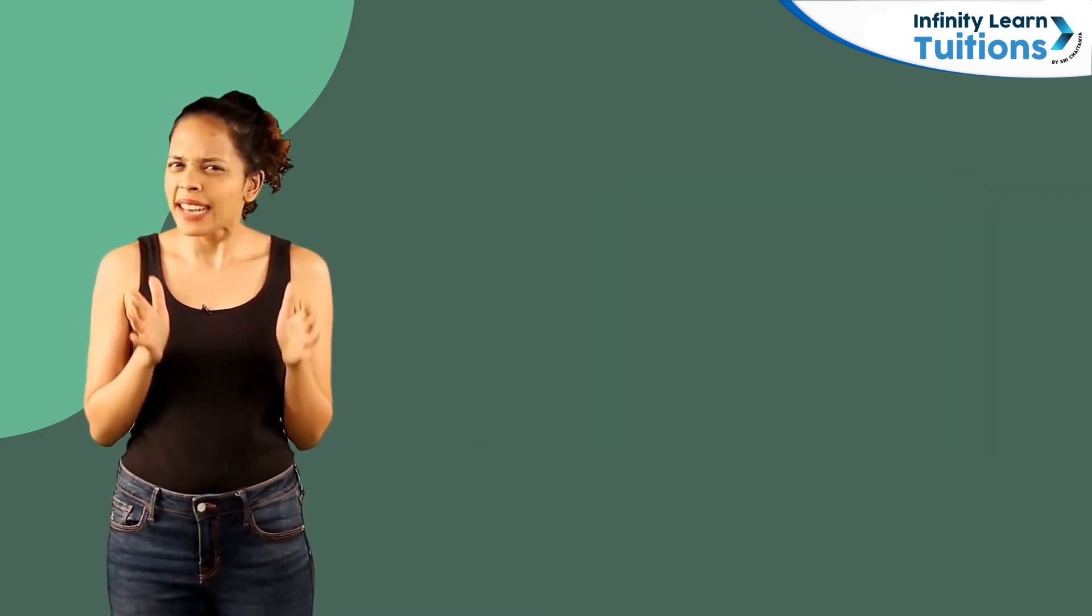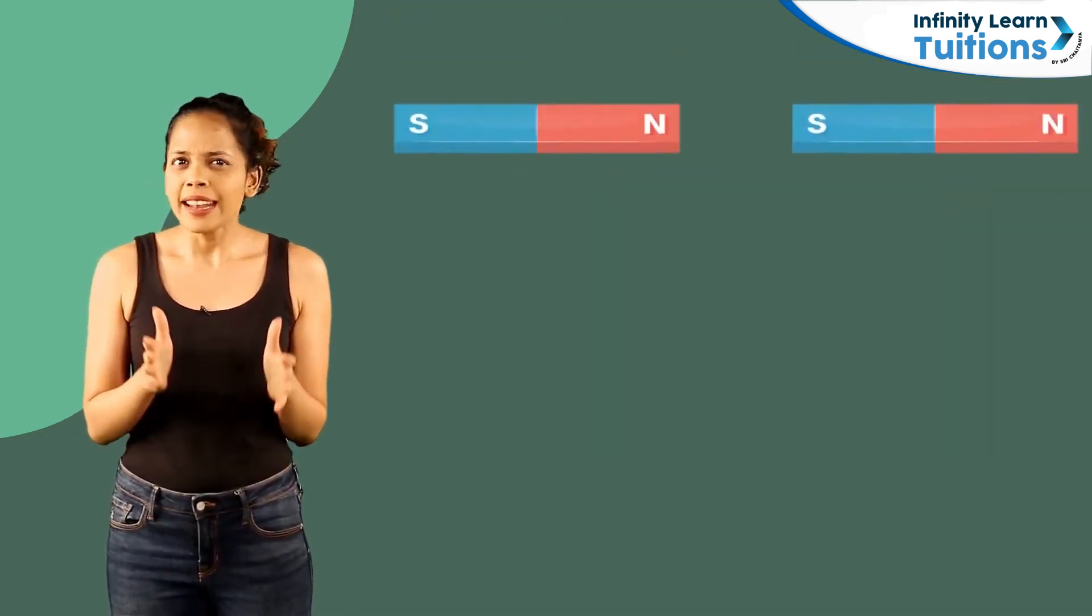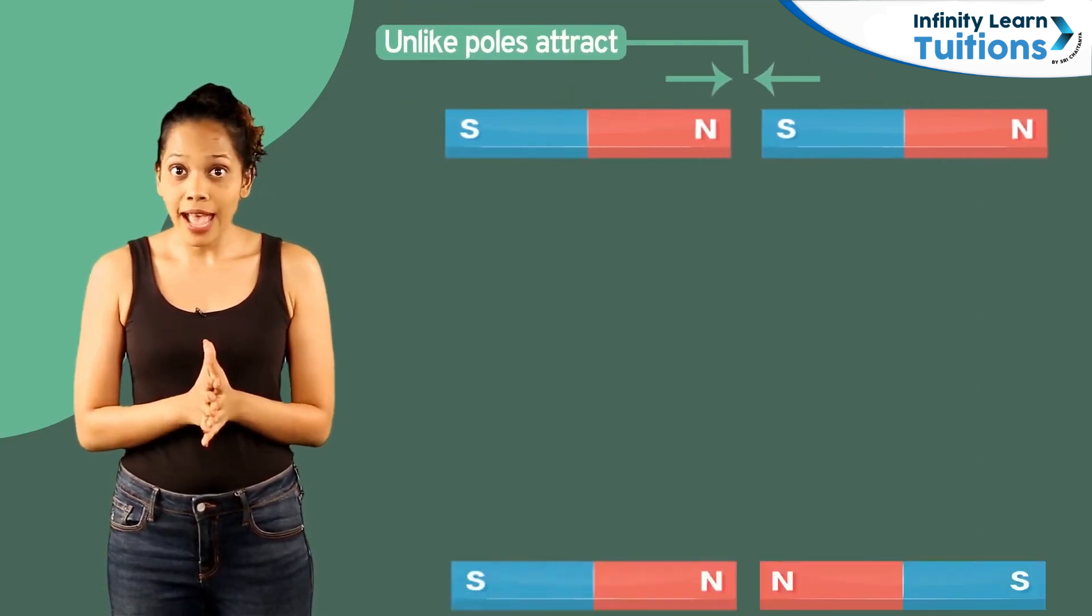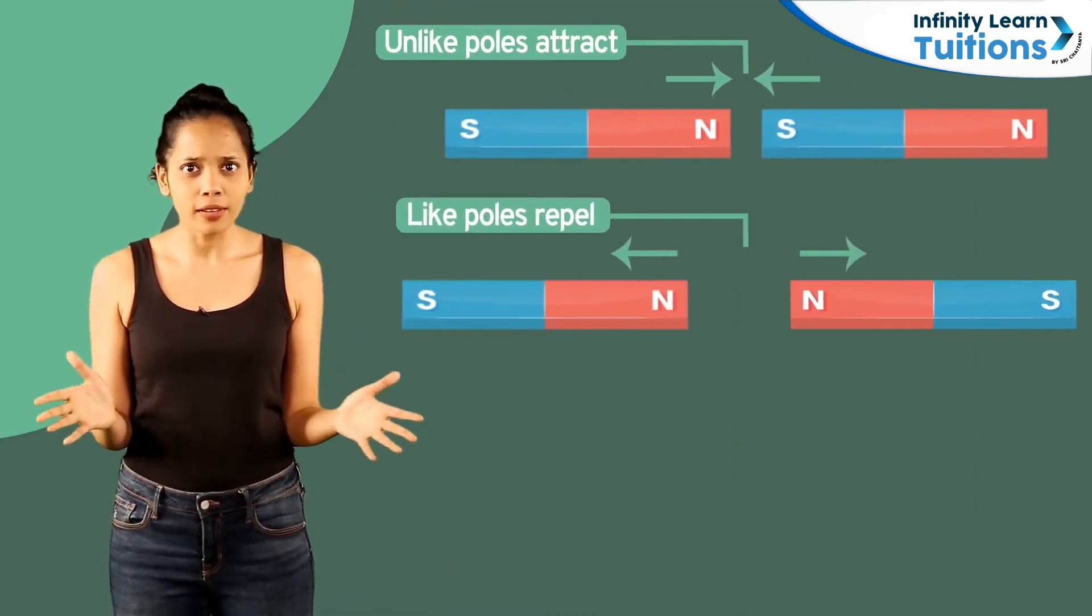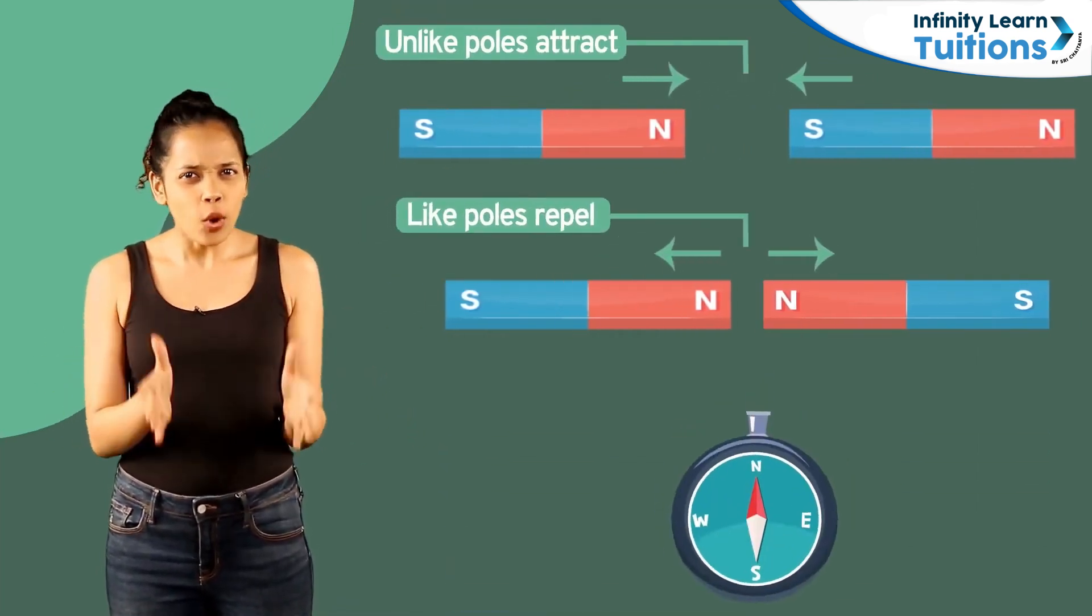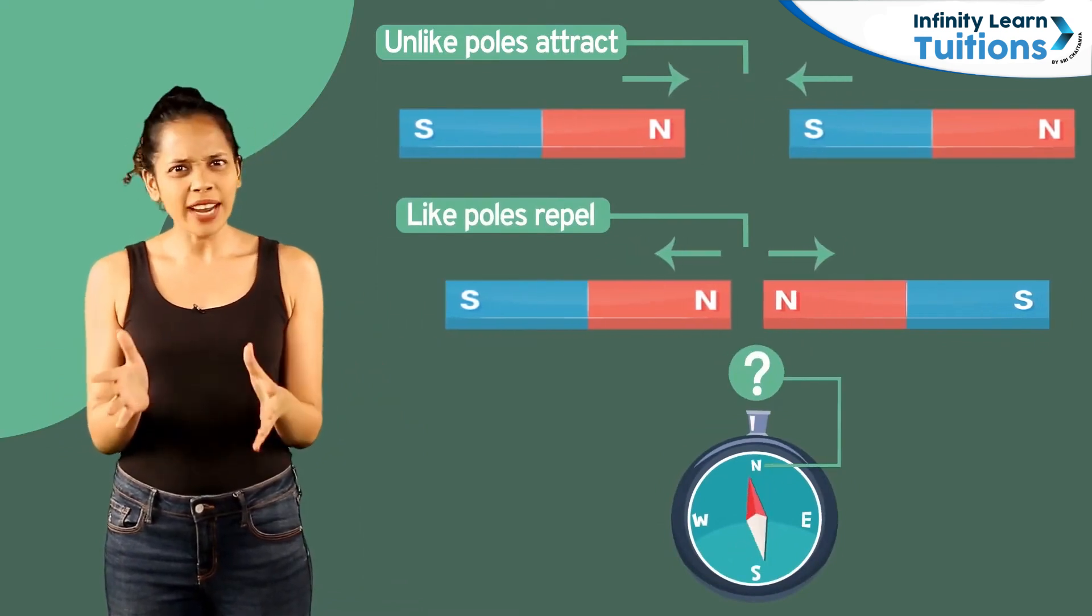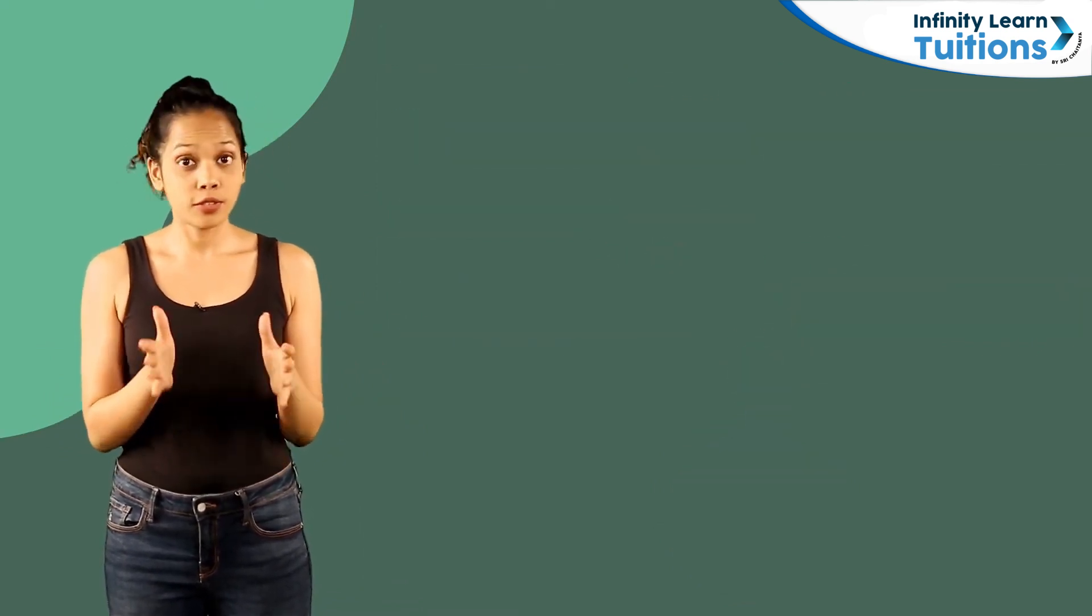When I first heard this, I was slightly confused. First, I was under the impression that unlike poles attract and like poles repel each other. Then, how can the north pole of the compass be attracted to the north?